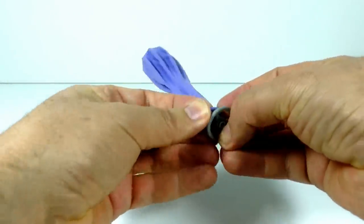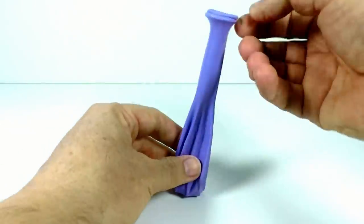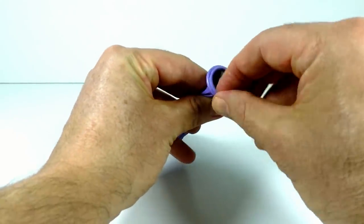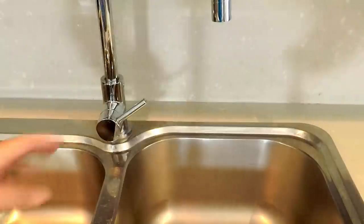Now pull the top of the balloon over the steering wheel and you're done. This is what it should look like and it should be stretched. Now you just need to fill it with water.